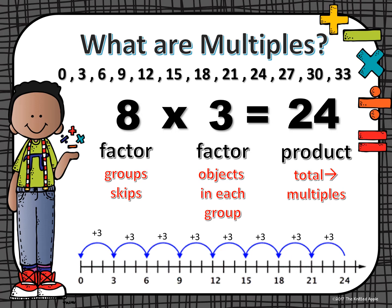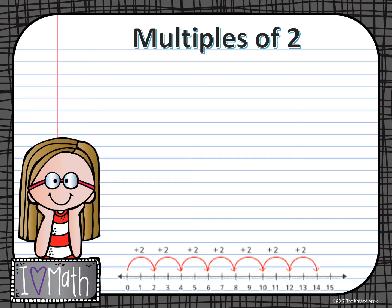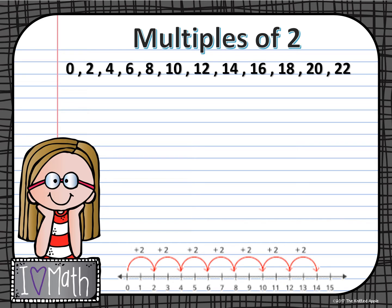So let's take a look at our multiples of 2, 5, and 10. Multiples of 2, as you notice on the number line down below, are the groups of 2 that we have when we're skip counting. So we have 0 for 0 groups of 2, 1 group of 2 is 2, 2 groups of 2 is 4, 3 groups of 2 is 6, 4 groups of 2 is 8, 5 groups of 2 is 10, and so on. We could continue on with counting by 2s to figure out what our product is in our facts.